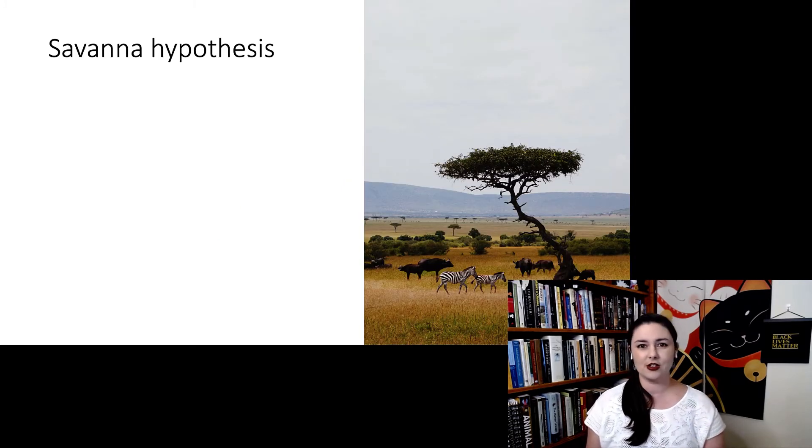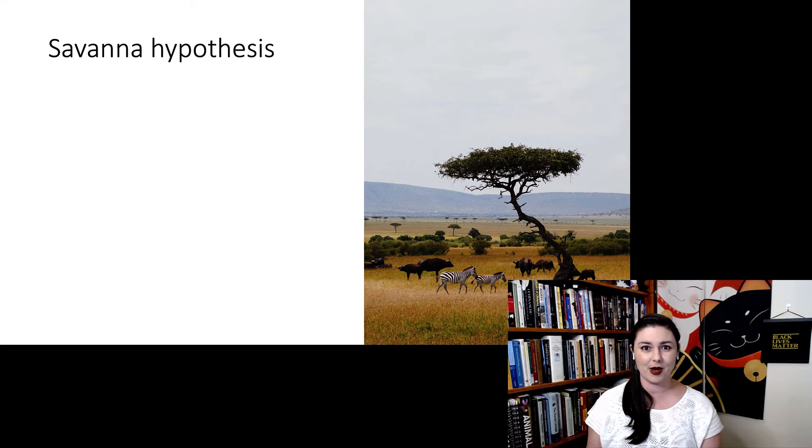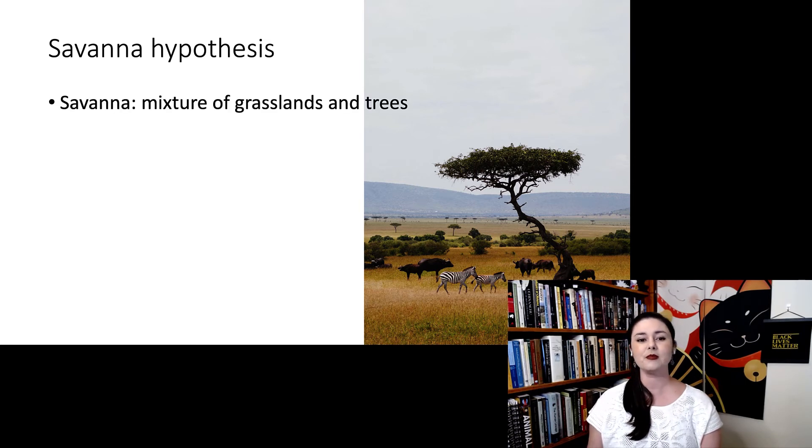But the most common thing you're going to hear talked about is something called the savannah hypothesis. And many of these other features actually tie into the savannah hypothesis in one way or another. So the savannah environment is a mixture of grasslands and trees, and it's the classic environment that most people think of when you hear the word Africa. Africa is, of course, huge, and there are a lot of different environments. There's desert, there's rainforest, but there's also the classic African savannah where the zebras, wildebeest, and lions roam.